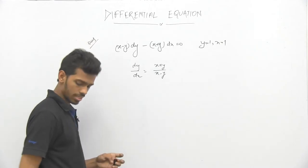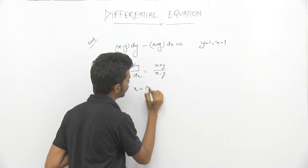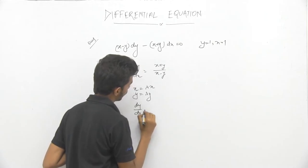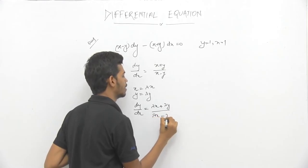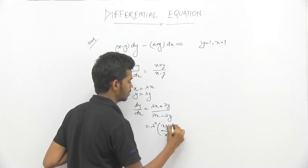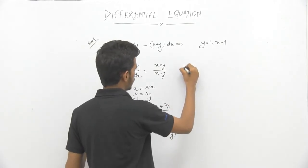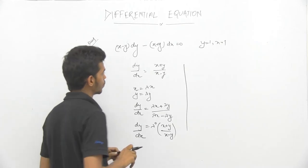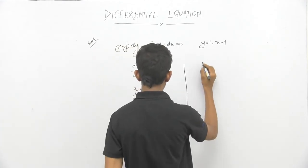First of all, again we have to check if this is homogeneous or not. For a homogeneous differential equation, put x = λx and y = λy: dy/dx = (λx + λy)/(λx - λy) = (x + y)/(x - y), which is λ⁰ power, so this is homogeneous.